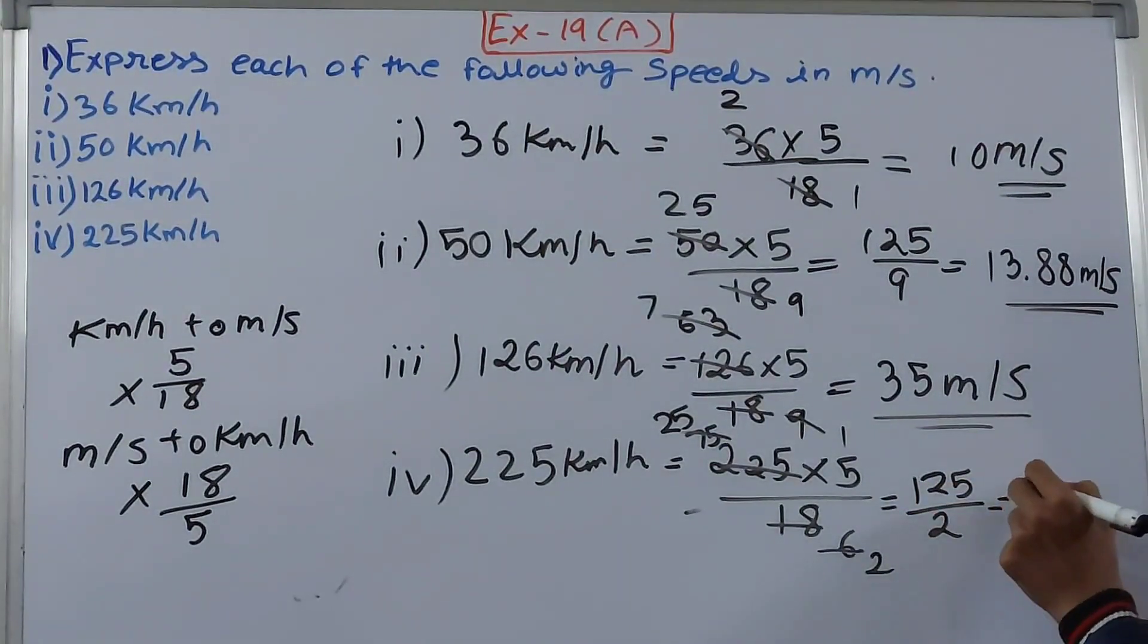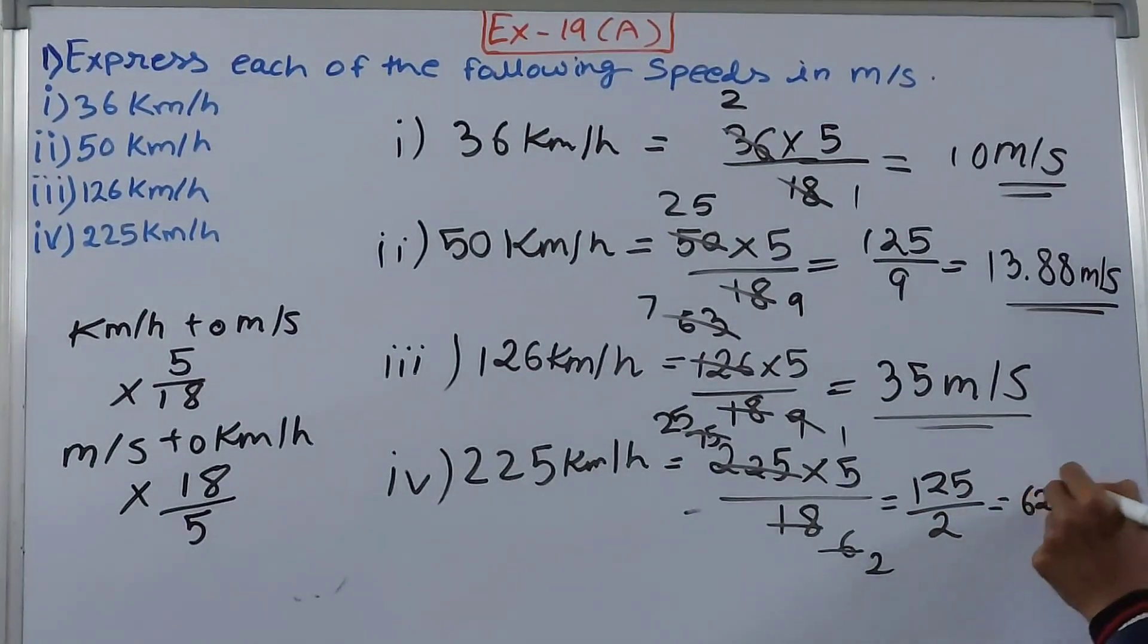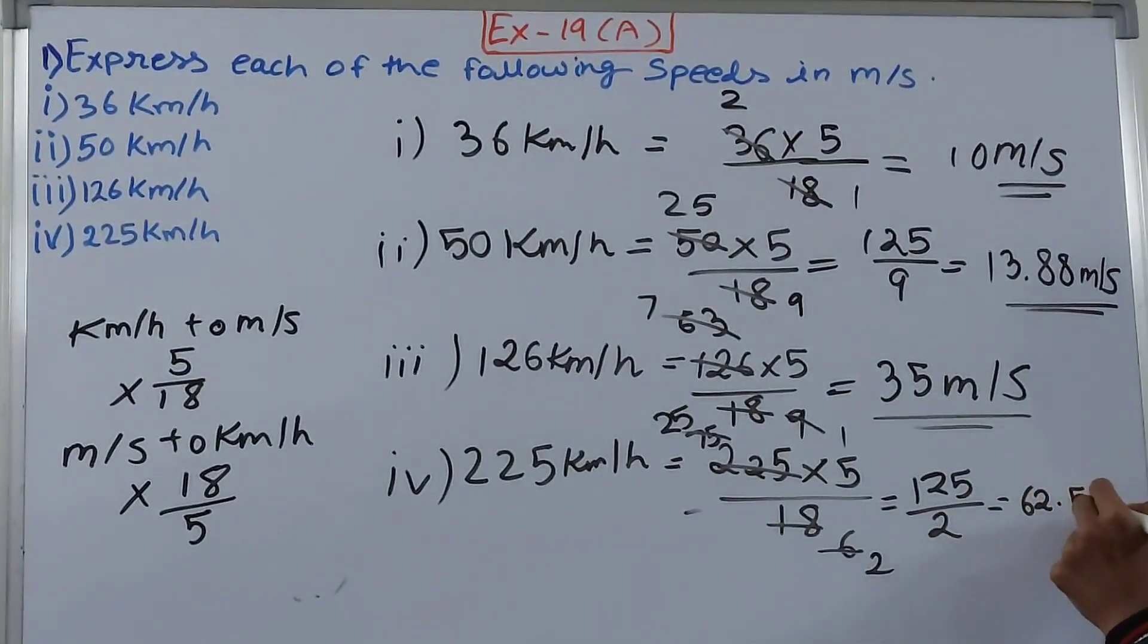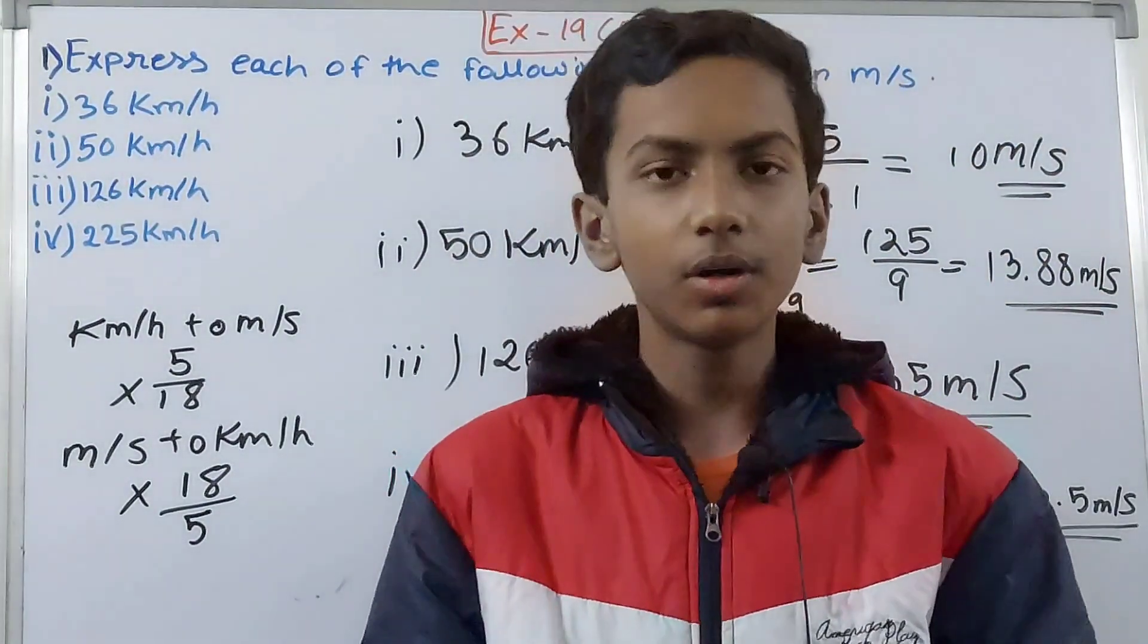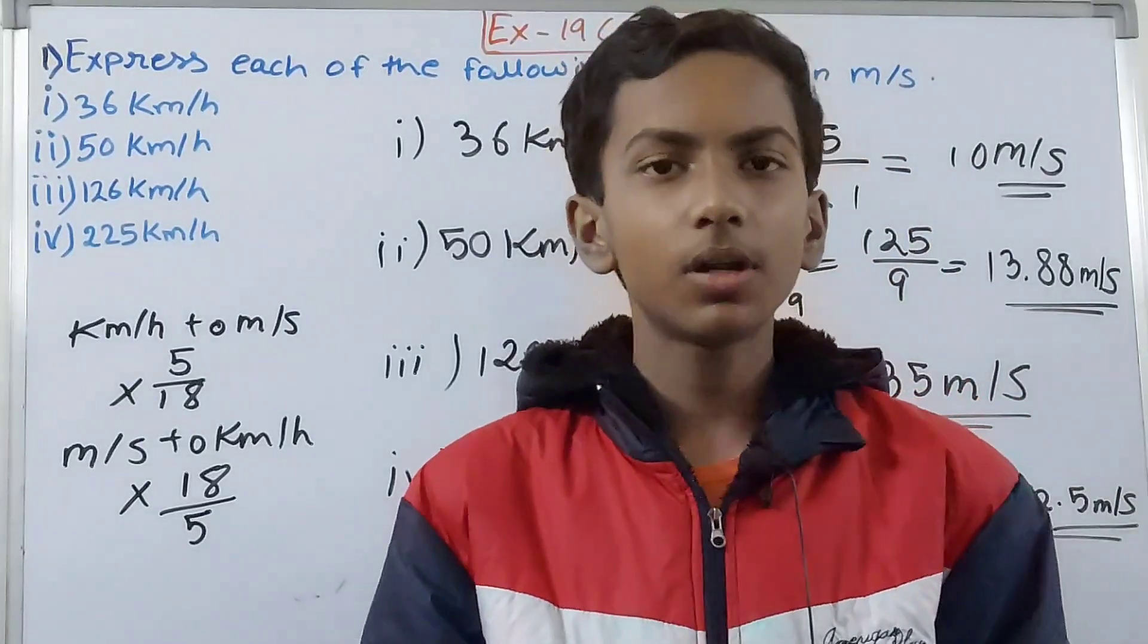Now solve this, so this will be 62.5 meter per second. The answer can come in decimal, you have to write the answer in decimal only, don't leave it as an improper fraction.